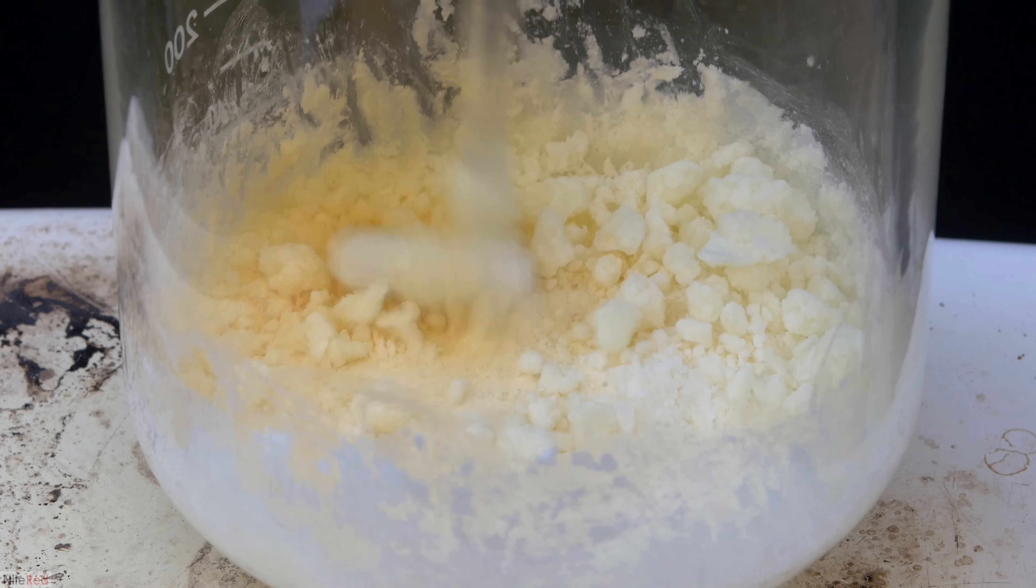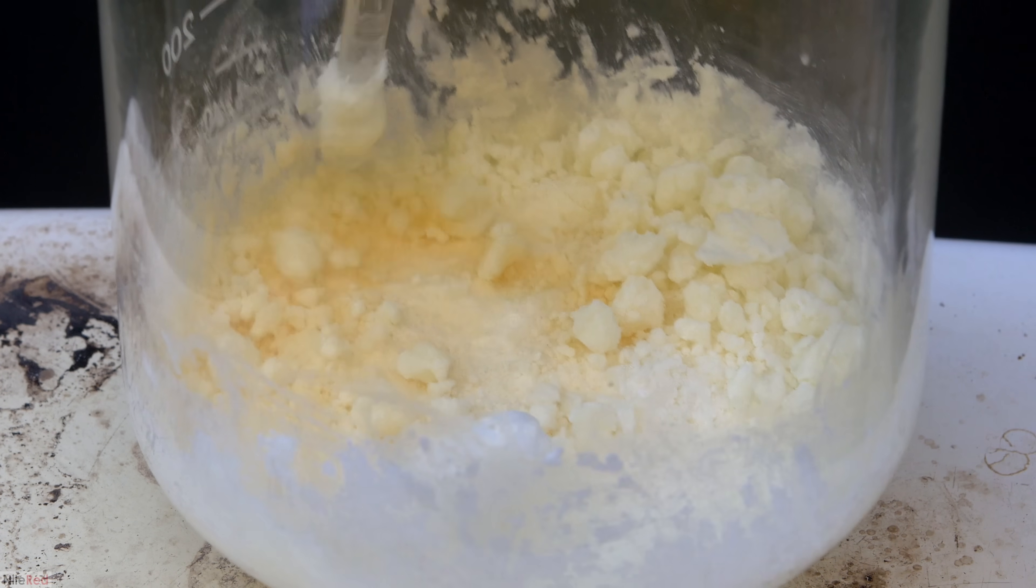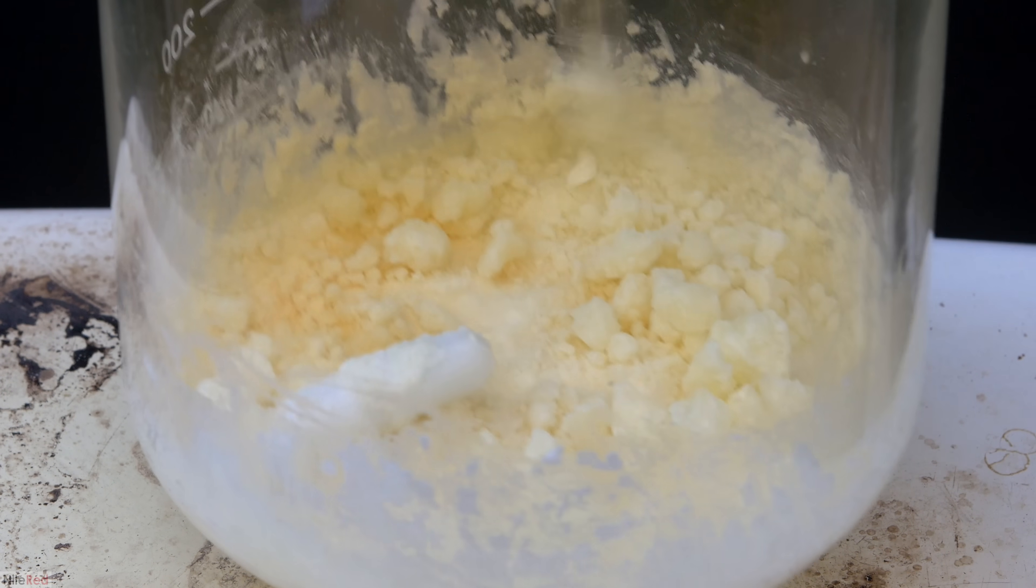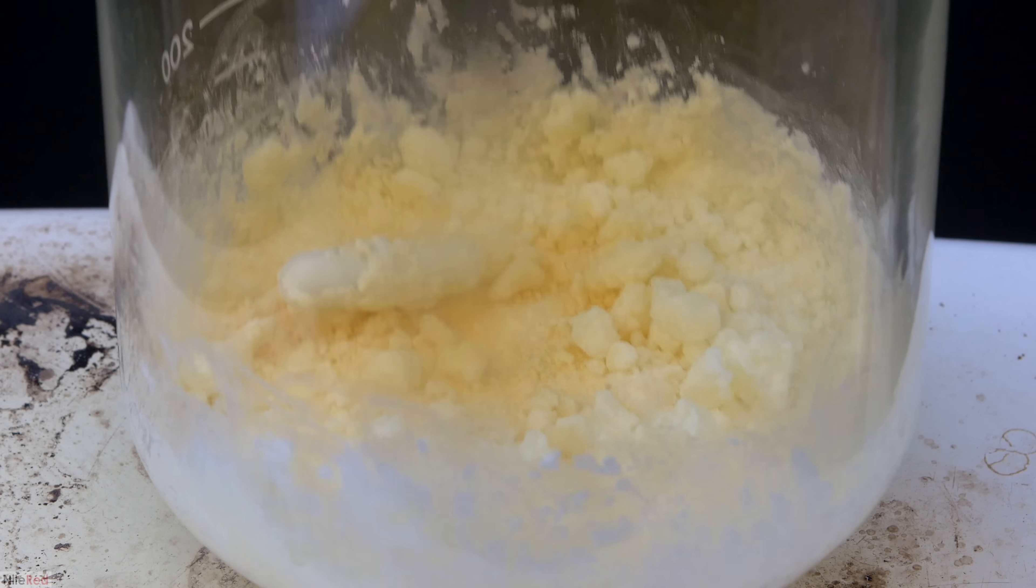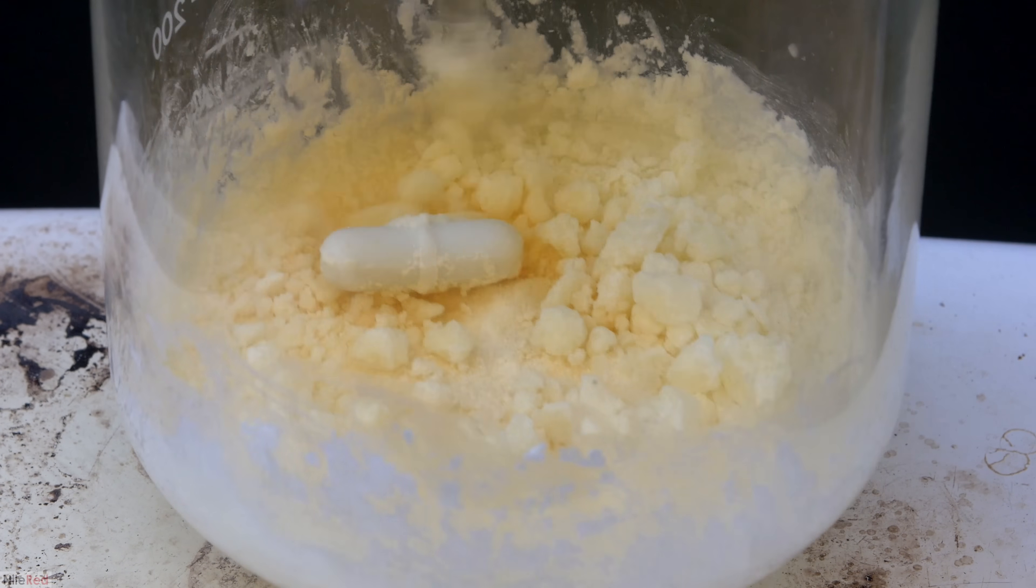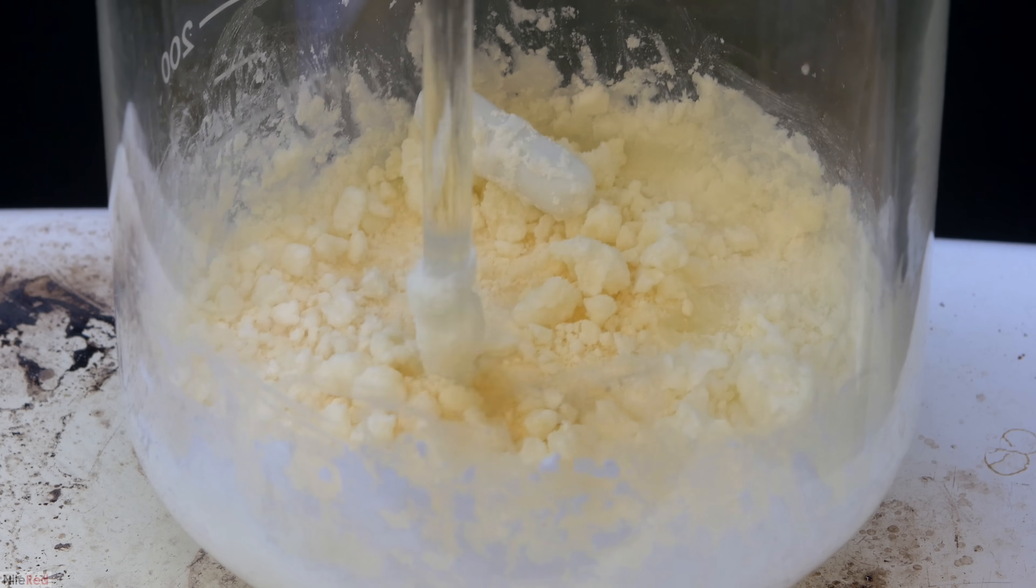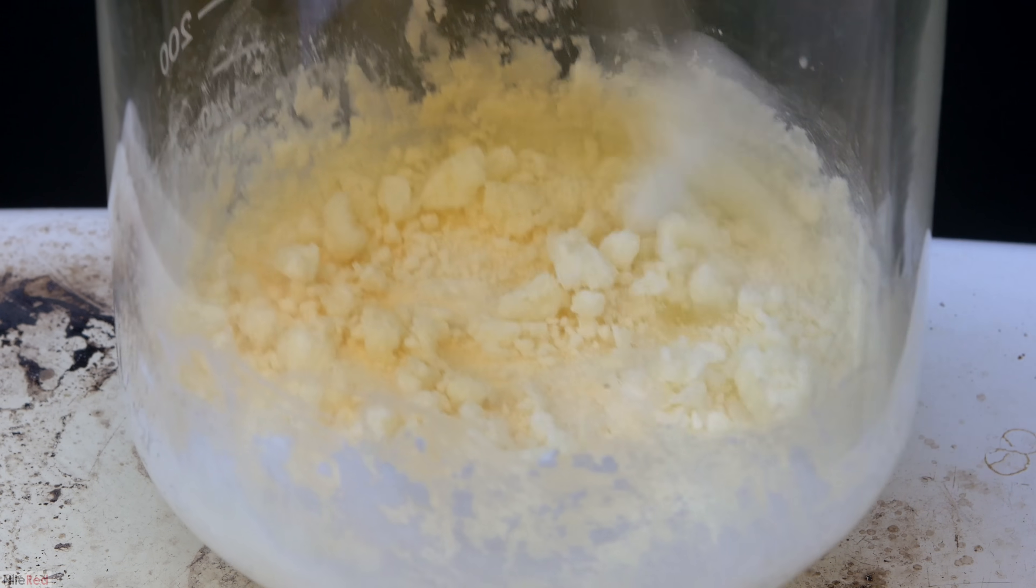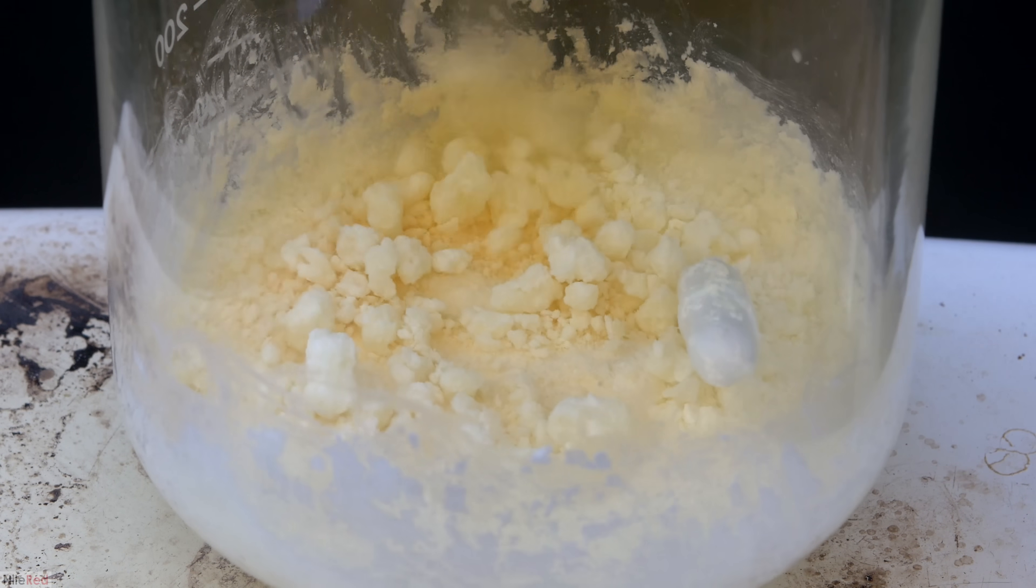The mercury(II) nitrate decomposes at relatively low temperatures, but to get a decent rate, I cranked the temperature up pretty high. However, it's very important to not let it get hotter than 400°C, otherwise our mercury oxide will decompose back into mercury metal.